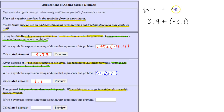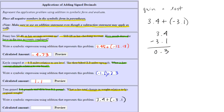We combine the weight gained plus the weight lost to determine his change from original weight, giving us the expression 3.4 + (-3.1). To find the difference, we subtract the smaller absolute value from the larger: this gives us 0.3. Since he gained more than he lost, the absolute value of 3.4 is bigger than that of negative 3.1, so the result is positive 0.3.